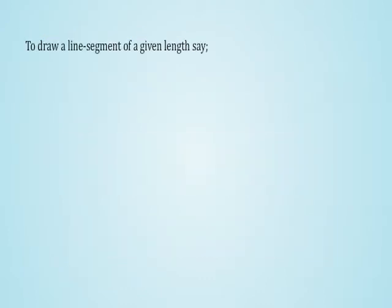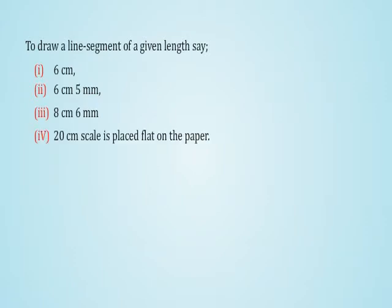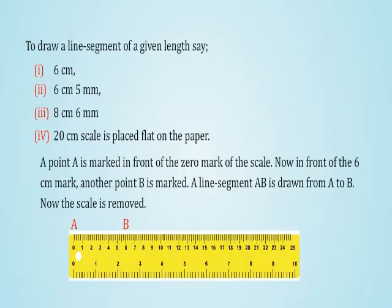To draw a line segment of a given length, say: 1) 6 cm, 2) 6 cm 5 mm, 3) 8 cm 6 mm. 20 cm scale is placed flat on the paper. A point A is marked in front of the 0 mark of the scale. Now in front of the 6 cm mark, another point B is marked. A line segment AB is drawn from A to B. Now the scale is removed.